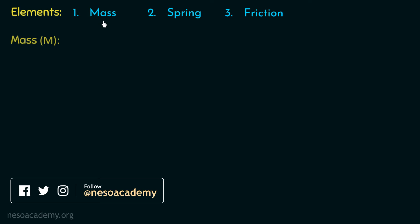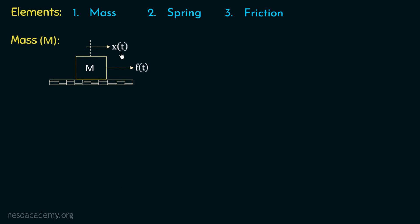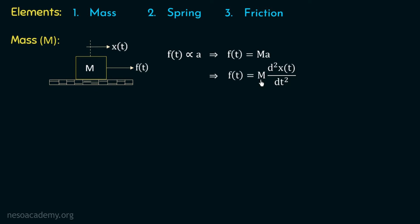Let's consider the first element which is mass. If we consider a box of mass m resting on a rigid surface and we apply a force f to the right hand side, then there will be a displacement x to the right hand side. We know that f is proportional to A, where A is the acceleration. Removing the proportionality, we get f equal to m multiplied with A. We can write f of t equal to m multiplied with d squared x of t over dt squared.